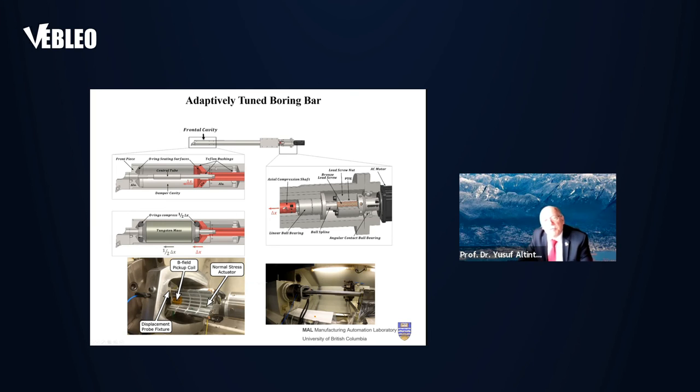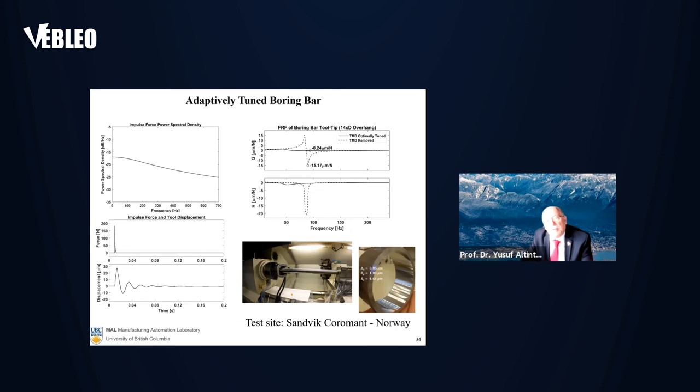This way, we can adapt the boring bar to the machine. And as a result, you can see the real part of the frequency of the machine was dropped from 15 micron to 0.24. Almost 60 times increase in productivity. And the vibrations are all eliminated.